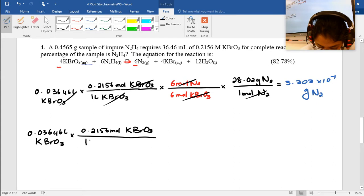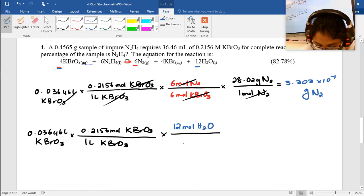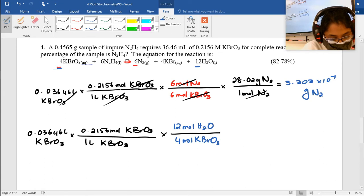I could have saved the moles of KBrO3 in my calculator actually. Should have done that. All right, now I'm going to do 12 to the 4 here. So 12 moles of H2O for every four moles of KBrO3. And that will give me the moles of water.